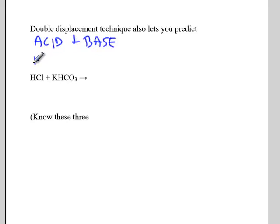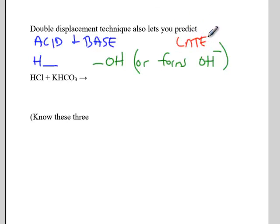We know an acid is a chemical that starts with an H. A base is a chemical that either ends in OH or it's going to form OH- when it goes into solution. We're going to see these in a lot more detail later on. We have an entire chapter around acids and bases.